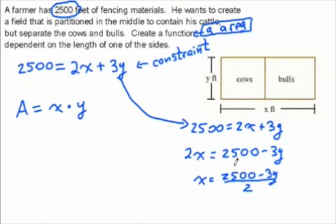Get your 1,250 and you can write this as 1,250, but you have to be careful—it's now going to be minus three-halves y. That 2 has to divide both terms.